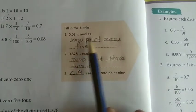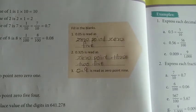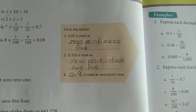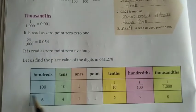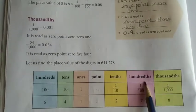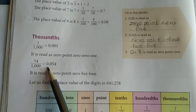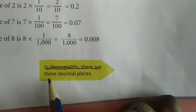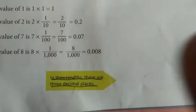Now come to the fill-in-the-blanks: 0.05 is read as zero point zero five; 0.325 is read as zero point three two five. Next, we move to thousandths. 1 by 1000 equals 0.001, and 54 divided by 1000 gives 0.054. In thousandths, there are 3 decimal places. To summarize: in tenths there is 1 decimal place, in hundredths there are 2 decimal places, and in thousandths there are 3 decimal places.